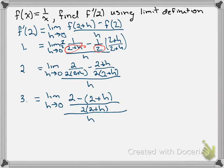Step 4, we distribute anything we need to in the numerator so that we can do some canceling. So here's step 4. We have limit as h approaches 0.